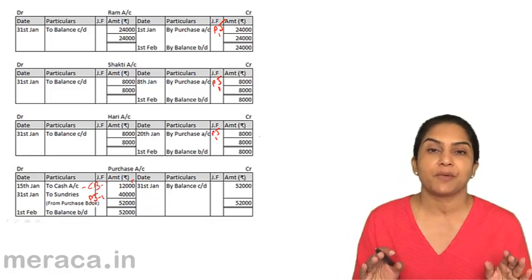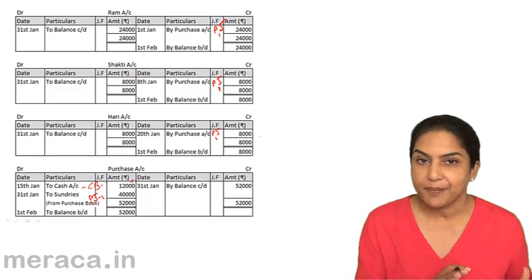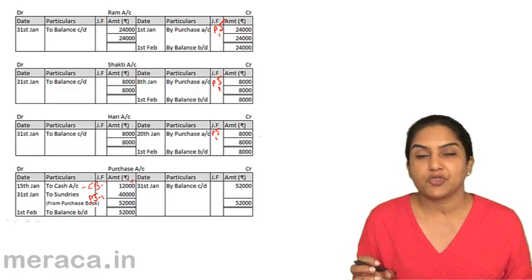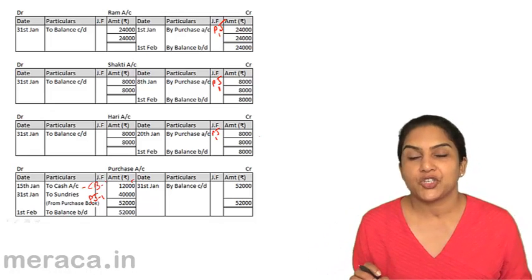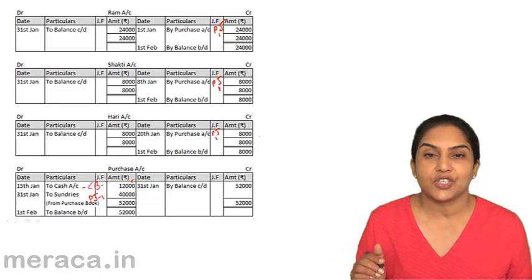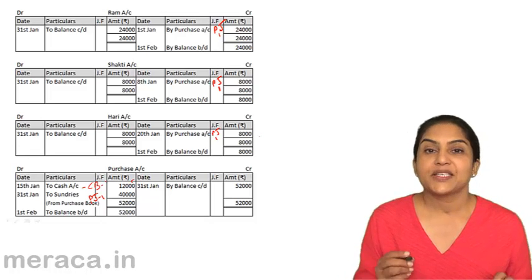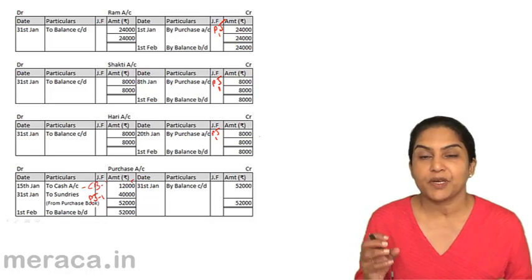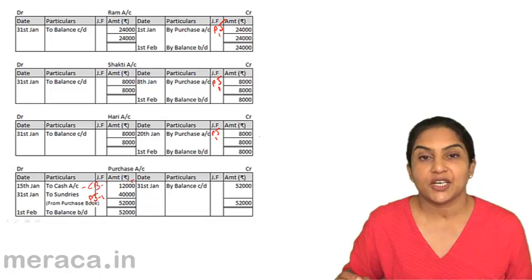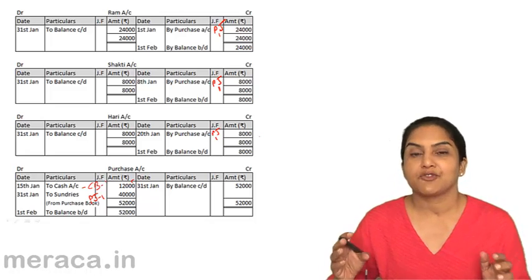So please note: the purchase day book, or purchase journal, records all credit purchases of goods — and goods only — as a book of original entry. It does not have a debit or credit column itself. Periodically, a total of the purchases is made; that total is posted to the debit of the purchases account as 'Sundries as per Purchase Day Book.' And individually, each supplier's account is posted on the credit side 'By Purchases.' This way, some duplication of posting is avoided — if there are 150 purchases in a month, the total is posted to the purchase account at one go rather than 150 times, saving time and making the process more efficient. All credit purchases can also be easily referred to from the purchase day book.